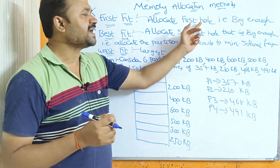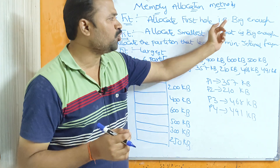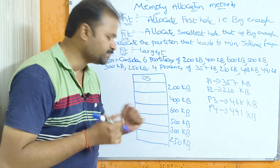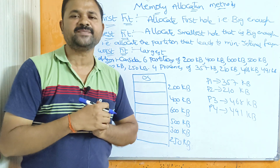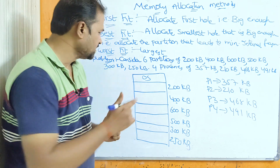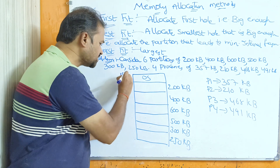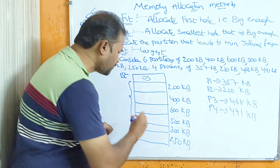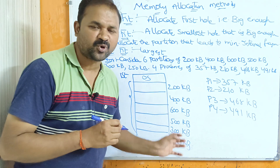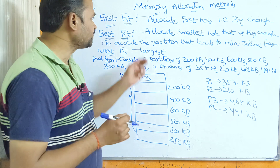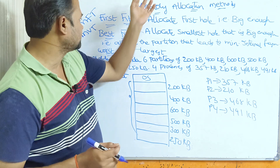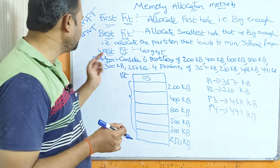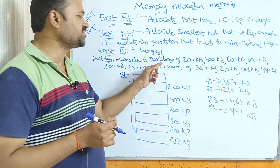First fit means: allocate the first hole that is big enough. Main memory is divided into two parts — the operating system part and the user processes area. Let us discuss these three techniques with the help of a problem. Consider six partitions.